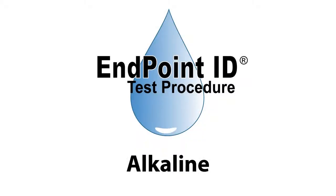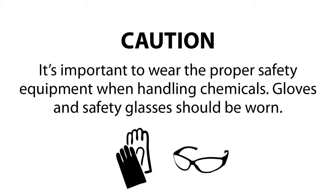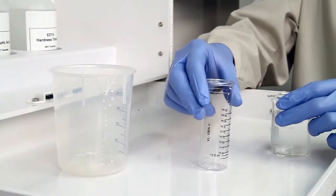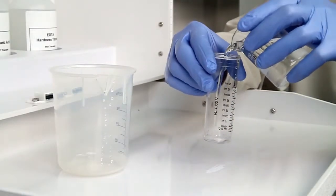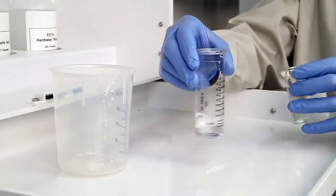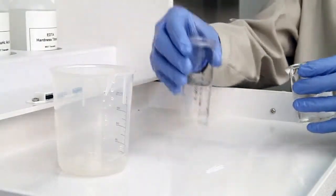This is a demonstration of an alkaline drop count test kit using endpoint ID procedures. The first step according to the endpoint ID procedure is to collect an accurate sample. The smallest change in sample size will lead to inaccurate results.